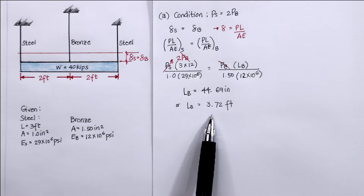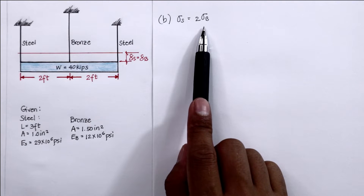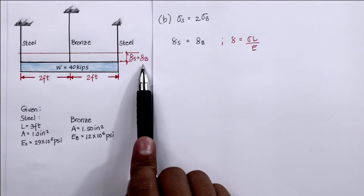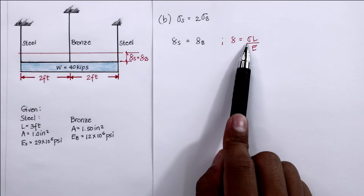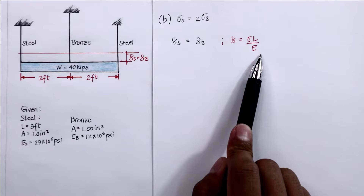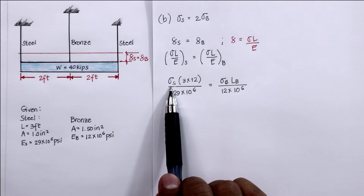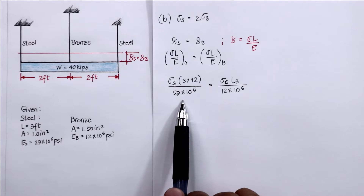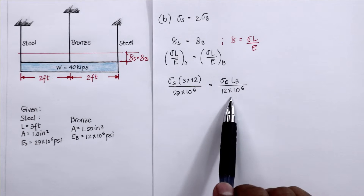For letter B, the given condition is that the stress of steel is twice the stress of bronze. Using again the compatibility condition where deformation of steel equals deformation of bronze, we substitute the deformation formula as stress × length / modulus of elasticity. Stress of steel × length of steel (3 ft × 12 inches) / E_steel (29×10⁶ psi) = stress of bronze × length of bronze / E_bronze (12×10⁶ psi).